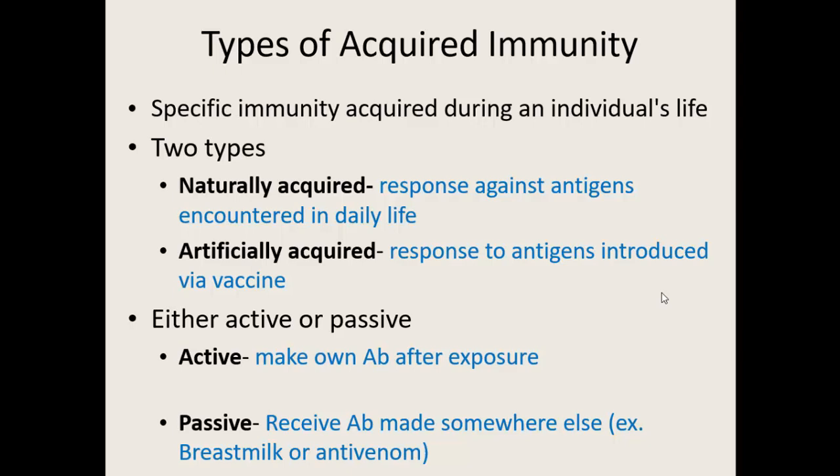Usually about half the class has naturally acquired immunity to chickenpox and the other half has an artificially acquired immunity. Naturally acquired means you actually got chickenpox at some point in your life and developed memory cells against it, so you shouldn't get it again — not always 100%. Artificially acquired means you had the chickenpox vaccine, so you don't get chickenpox. Also still not 100%, but you do have a strong immune system against it.